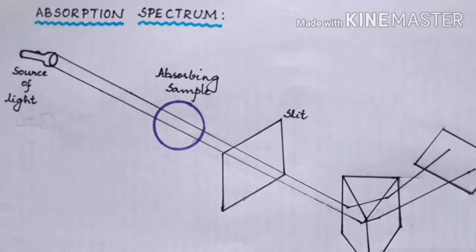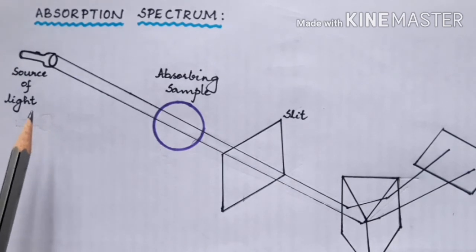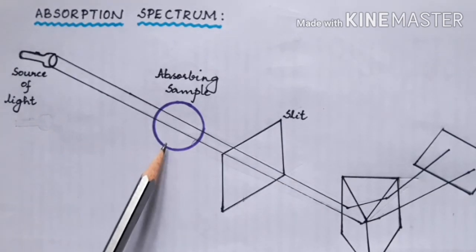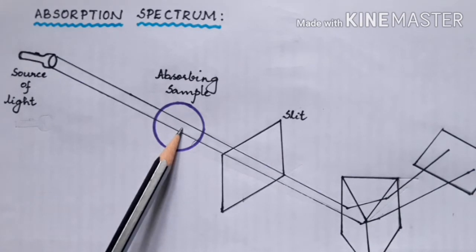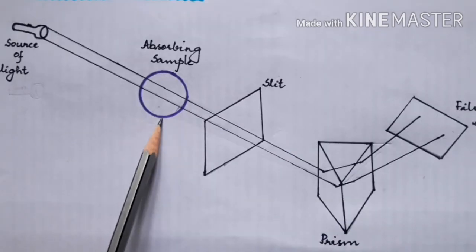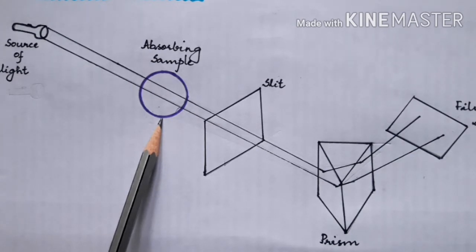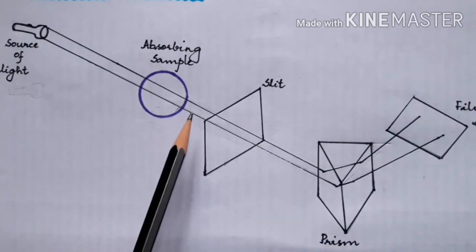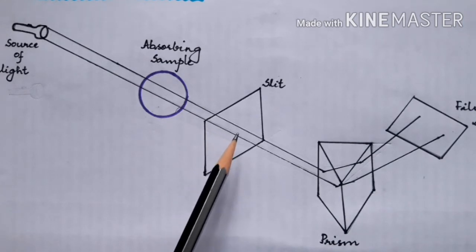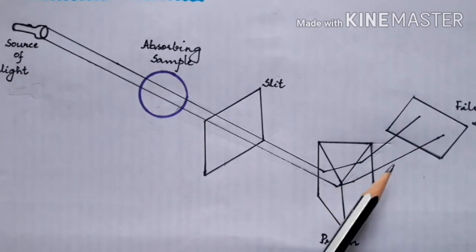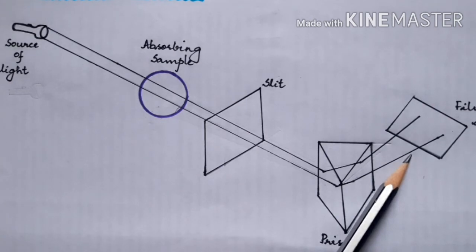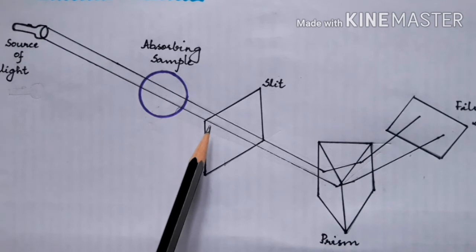The experimental setup for absorption spectrum consists of the sample kept in front of a spectroscope with a prism and a photographic plate. Unlike the emission spectrum, here the sample is kept in front of a source of white light and irradiated continuously. Each sample has a unique property of absorbing certain wavelengths, so the absorbed wavelengths will be missing in the white light. The remaining transmitted light falls on the prism and gets deflected.